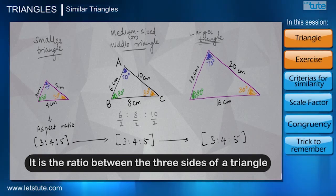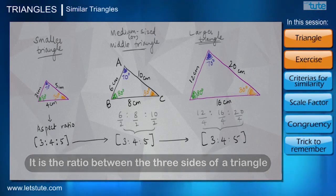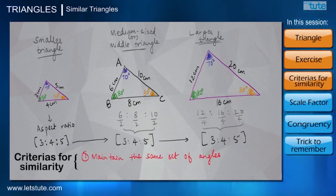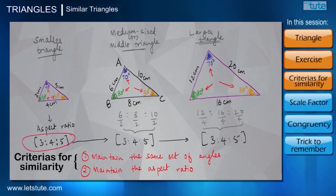So 6 is to 8 is to 10 will again give us 3 is to 4 is to 5 if we divide by 2. Similarly, 12 is to 16 is to 20 will also give us 3 is to 4 is to 5 if we further divide by 4. So what we are doing is we are not only maintaining the angle measure, but also we are maintaining the overall aspect ratio of the triangle.